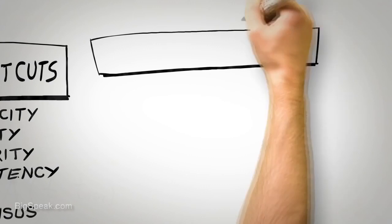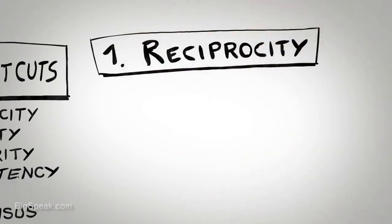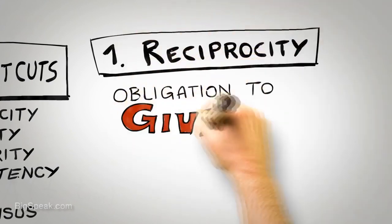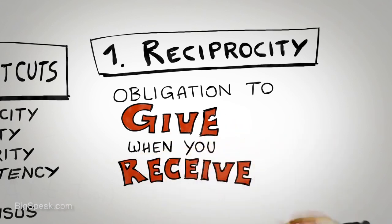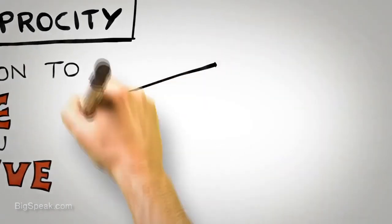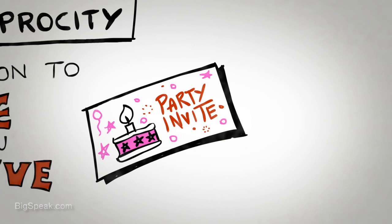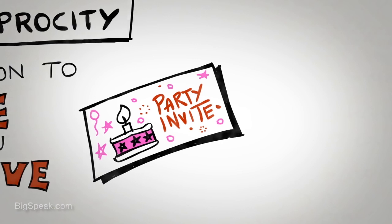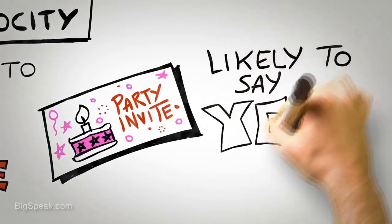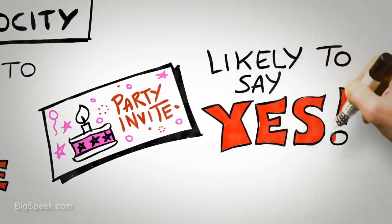So the first universal principle of influence is reciprocity. Simply put, people are obliged to give back to others the form of behavior, gift, or service that they have received first. If a friend invites you to their party, there's an obligation for you to invite them to a future party you are hosting. If a colleague does you a favor, then you owe that colleague a favor. And in the context of a social obligation, people are more likely to say yes to those that they owe.